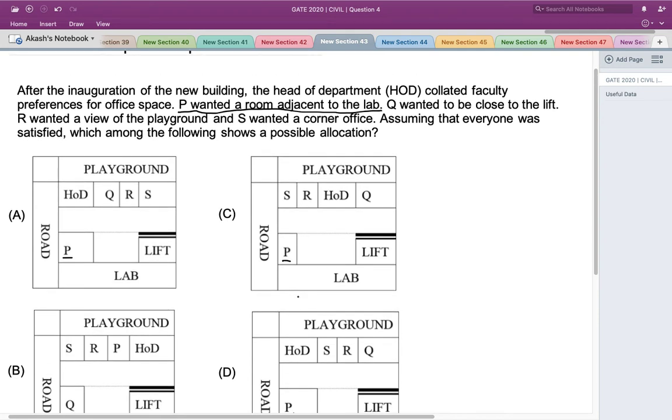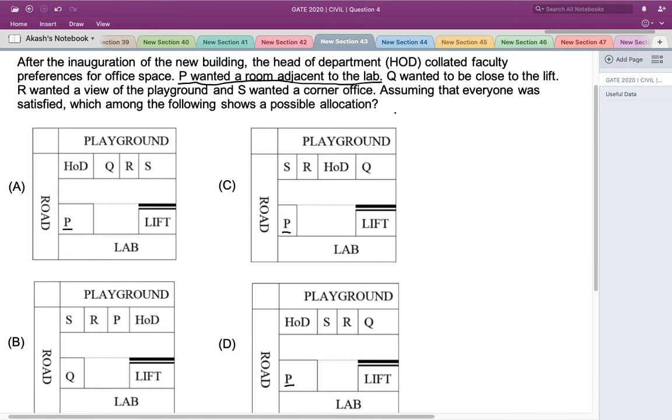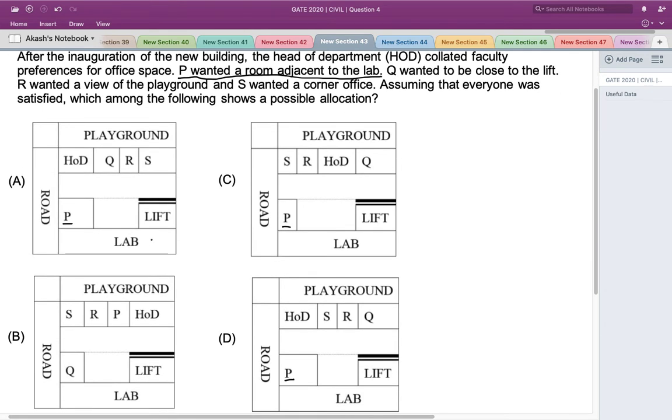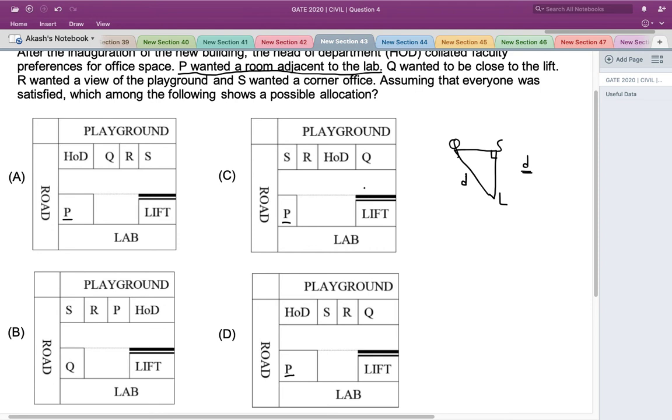Now let's look at the second condition, which is given as Q wanted to be close to the lift. I can say that options C and D are the only two options that satisfy this condition. Option A has Q which is not as close to the lift as given in options C and D. In the case where Q, S, and lift form a right angle triangle, in option A, Q is diagonally located to the lift. In a right angle triangle, the diagonal is the longest side, whereas in options C and D, it is just located vertically. The diagonal would be a longer distance compared to the vertical distance. Hence, the option now boils down to C and D.